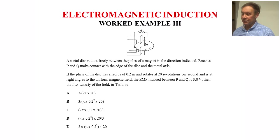If the plane of the disk has a radius of 0.2 meters and rotates at 20 revolutions per second, and at right angles to the uniform field, the EMF induced between P and Q is 3 volts, then they want you to find the flux density of the field in Tesla. The answer will follow shortly.